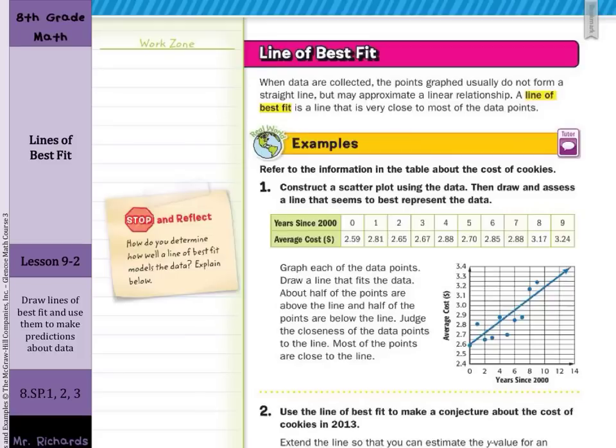When data are collected, the points graphed usually do not form a straight line, but may approximate a linear relationship. A line of best fit is a line that is very close to most of the data points.